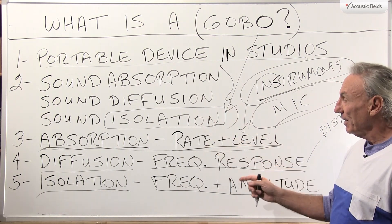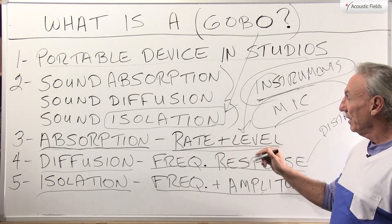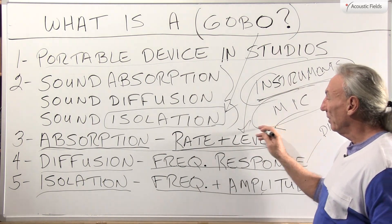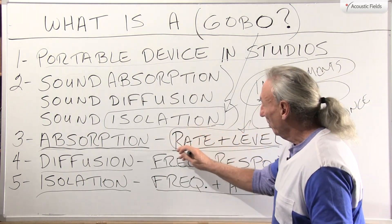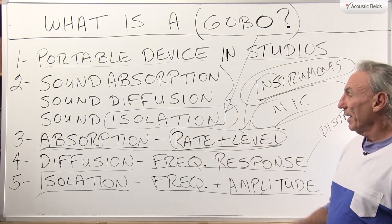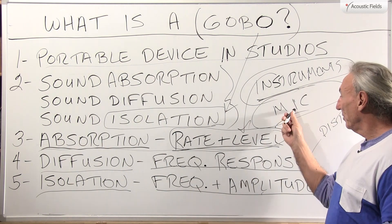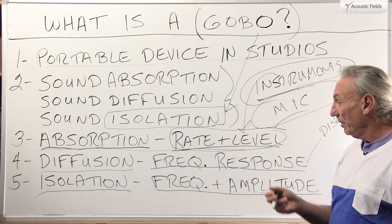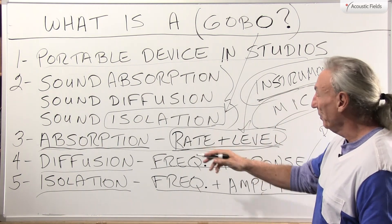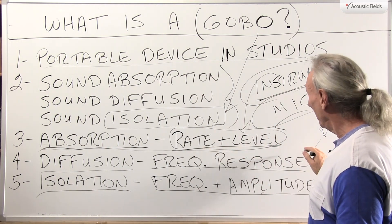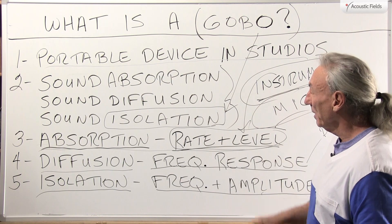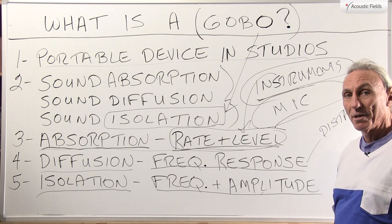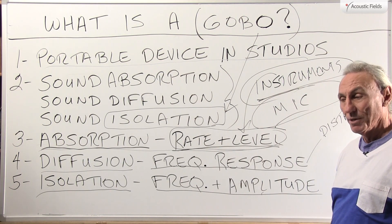The bottom line is if we're going to design one of these gobos with absorption, we've got to have a particular rate and level to match our usage — instruments or voice. Diffusion is another part that we could put in there, and we use this constantly in our vocal rooms.